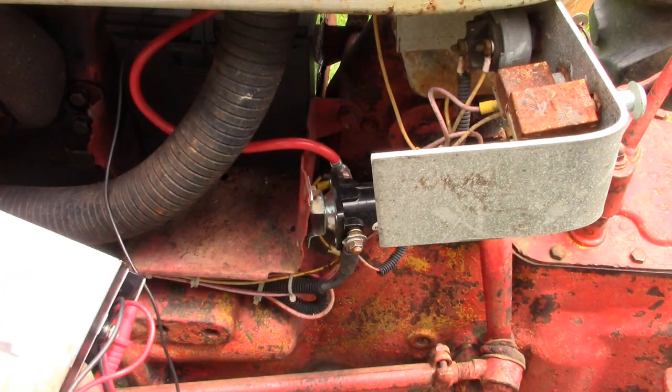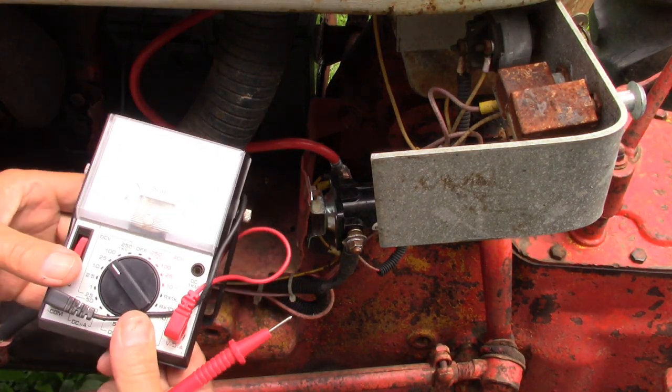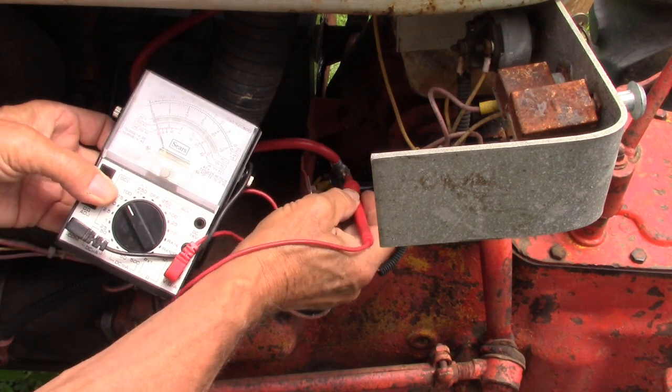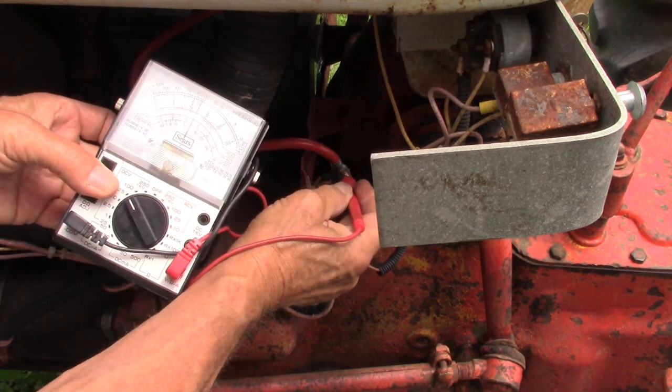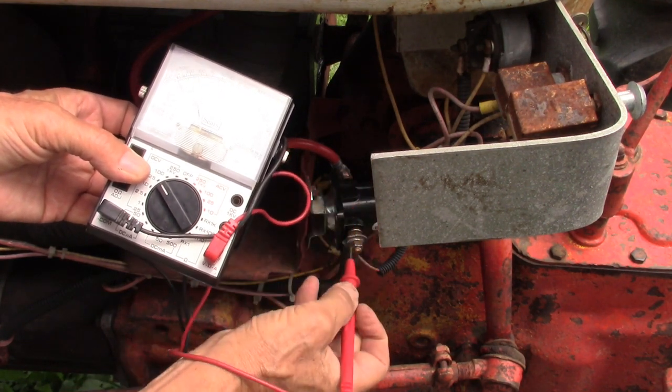Now we need to locate where we're going to connect our meter to. We want to connect to the battery however we want to have it keyed. Right here the key is off and that side of the solenoid is energized.